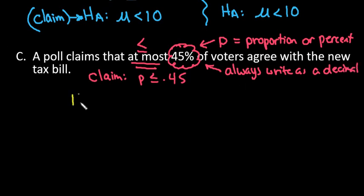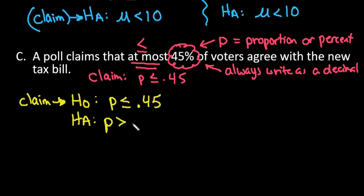So then when we go to set up our null and our alternative hypotheses, we look at if this is a statement of equality or inequality. And since our claim is that p is less than or equal to 0.45, we would say our claim is about the null hypothesis. The alternative is just the opposite. So we would say that p is greater than 0.45.